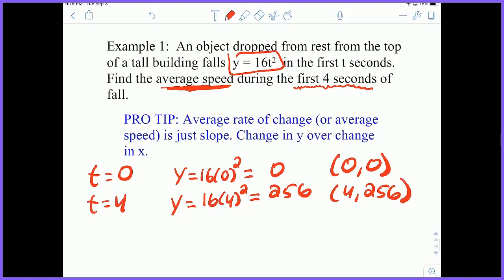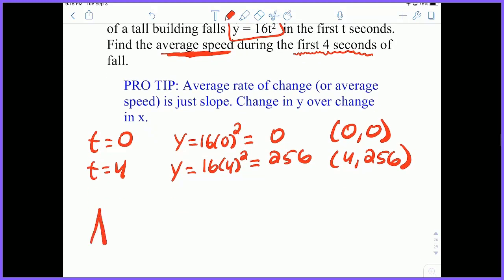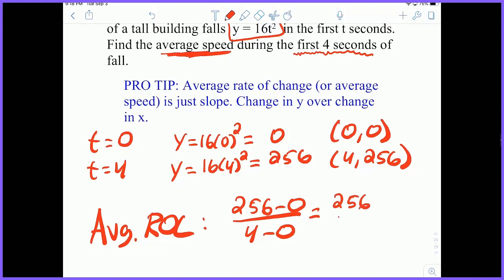So to calculate the average rate of change, which I'll abbreviate average ROC, is equal to y2 minus y1 over x2 minus x1. And this is just simply 256 over 4, which is going to equal 64. I didn't really provide a unit, so we'll just say feet per second. Okay, so anytime you're calculating the average rate of change, it's just simple algebraic slope. y2 minus y1 over x2 minus x1.